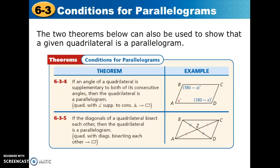Theorem 6-3-5 has to do with the diagonals. The diagonals bisect each other so that each half of a diagonal is congruent to the other half — then we know that we have a parallelogram. In the examples that follow, we're going to be using these different conditions to solve problems.